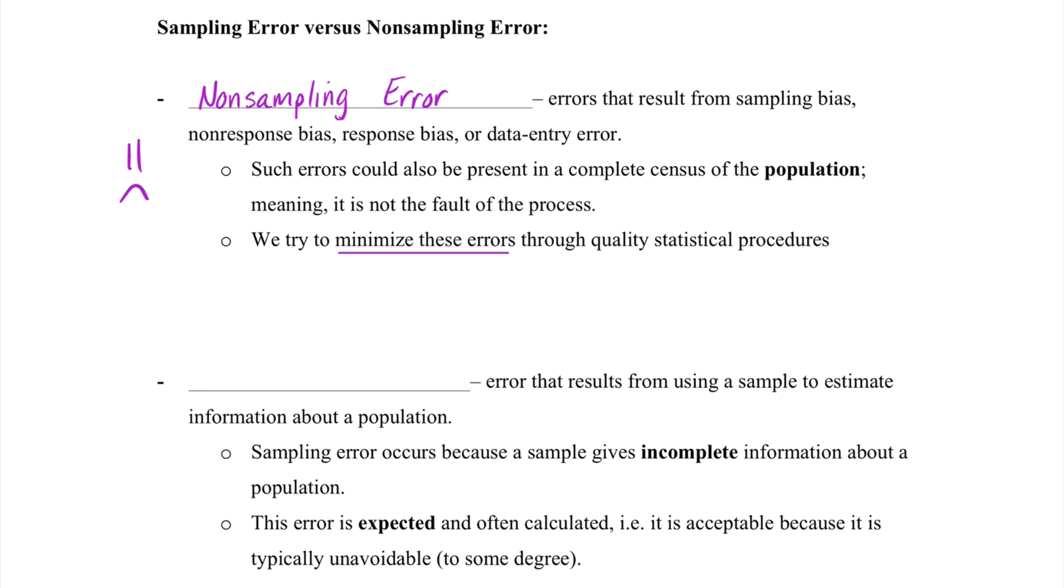On the other hand, we have sampling error. This would be error that results from using samples to estimate information about a population, meaning we know we can't gather the entire population information, so we're using this sampling approach. As a result, we know the results can be a little bit different than what the true population is. This is because a sample gives incomplete information about a population. We don't get to hear from everyone if we're doing a survey.